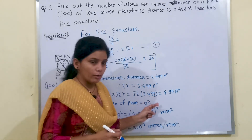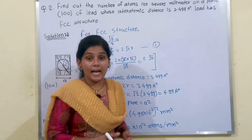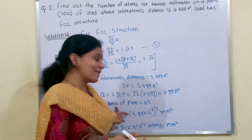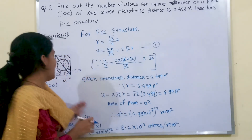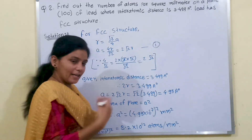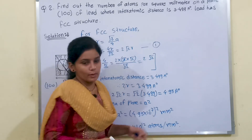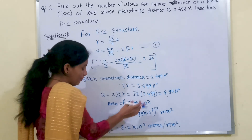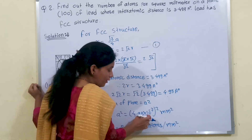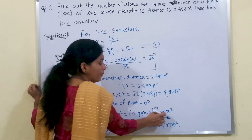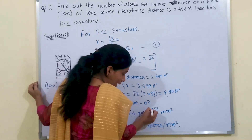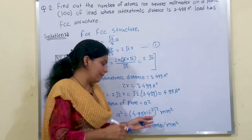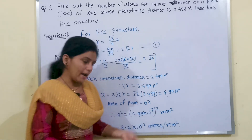The area of the plane is equal to a². The area of a square equals side squared, and here we have one plane, so directly the area of that plane = a². We have the value of a = 4.95 Å. Converting, a² = 4.95 × 10⁻⁷ mm² (since we multiply by 10⁻⁷ to convert to square millimeters).